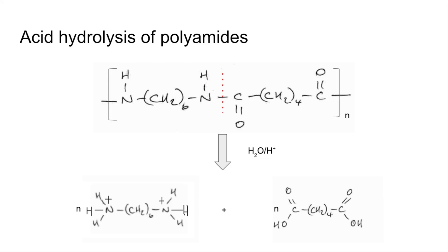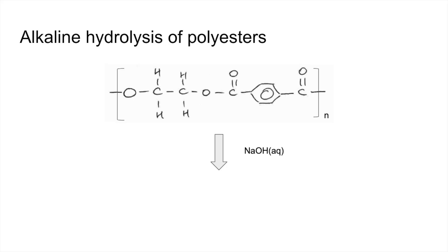Moving on to alkaline hydrolysis now. I'm going to use the same polyester as before. We've got aqueous sodium hydroxide, so the water is going to break that ester bond and give us the original monomers back. But this time we've got to bear in mind we've got an alkali present that can react with the dicarboxylic acid. It can remove the proton, accept the proton, and form the salt.